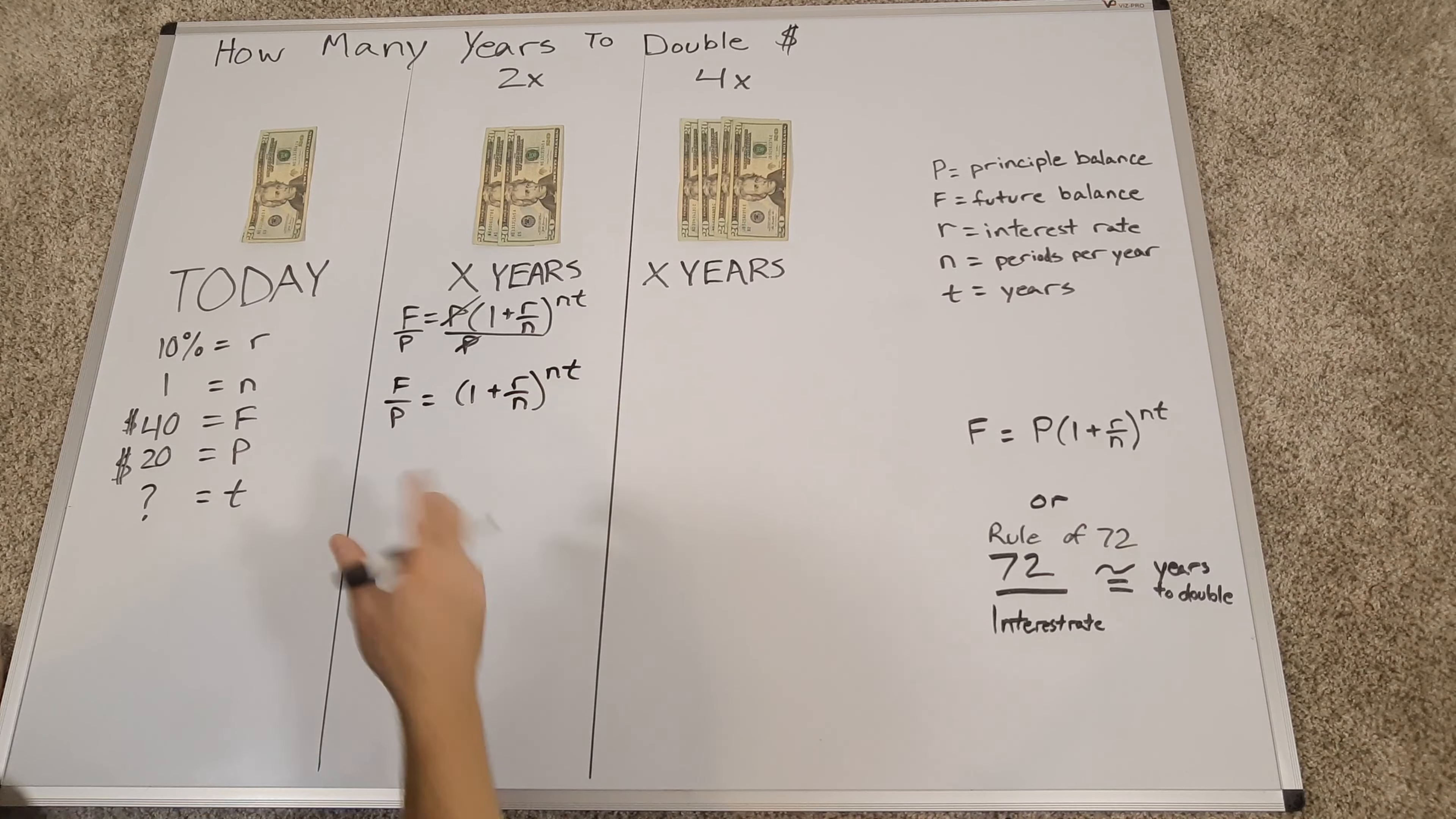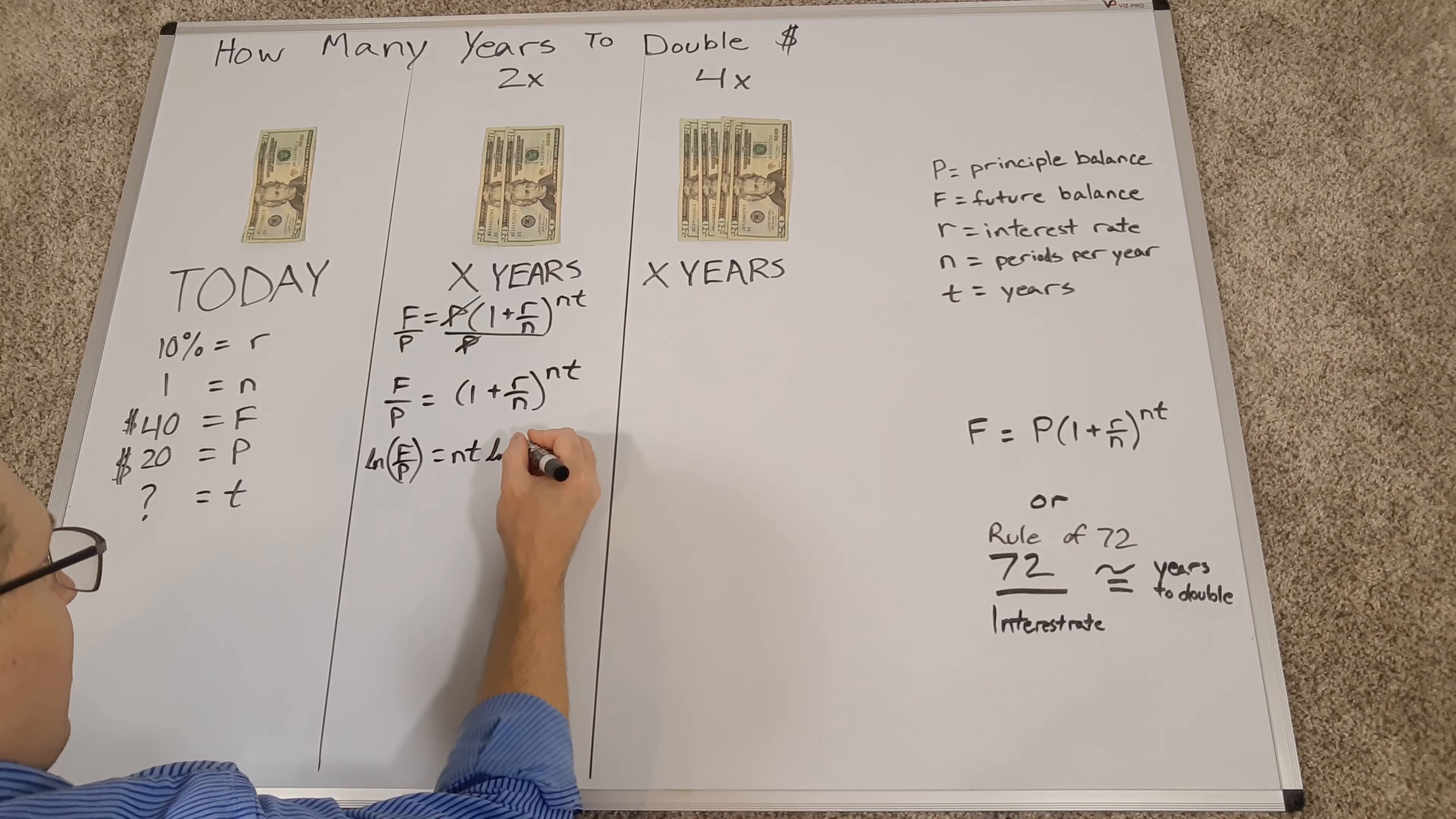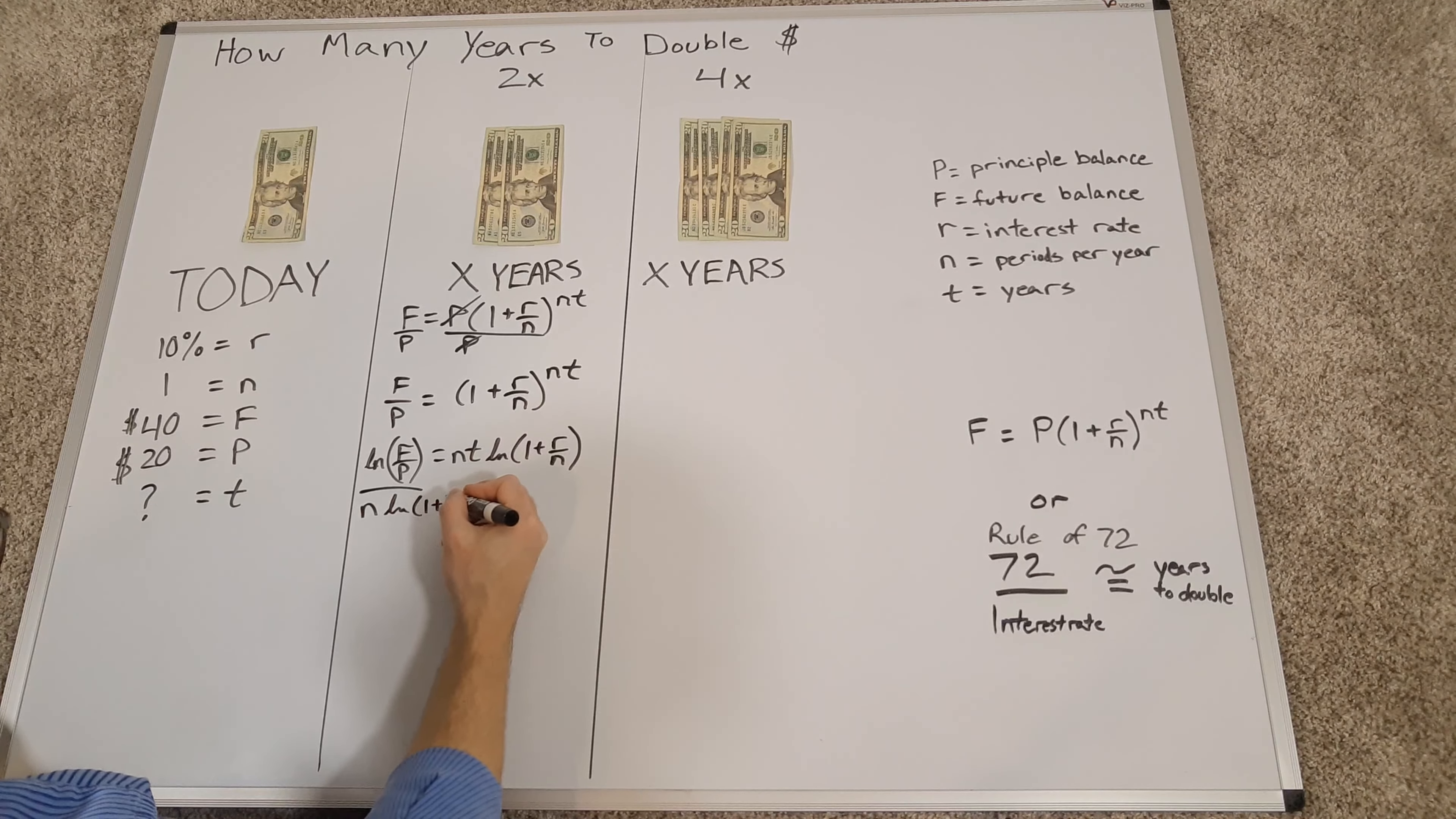Now to get this down, you just need to take a log. So we're going to take a log of both sides. I'm just going to do the natural log of f over p is equal to nt natural log of 1 plus r over n. Now since the n, the t, and the natural log are all being multiplied together, I can divide both sides by the same thing. So I'm going to divide by n natural log of 1 plus r over n on both sides.